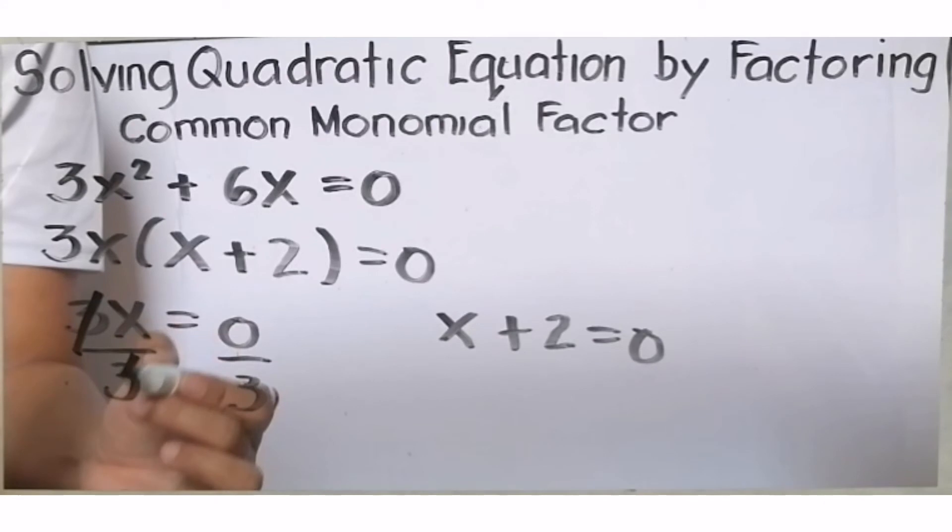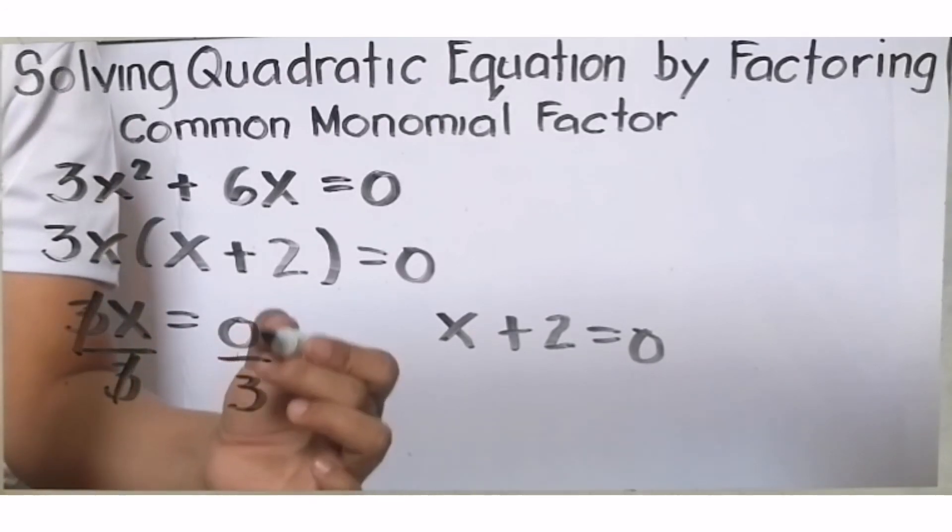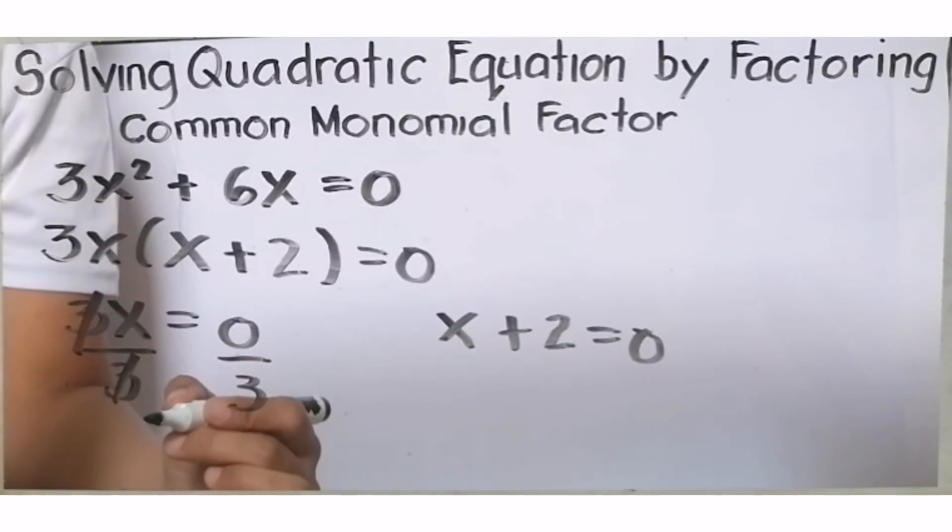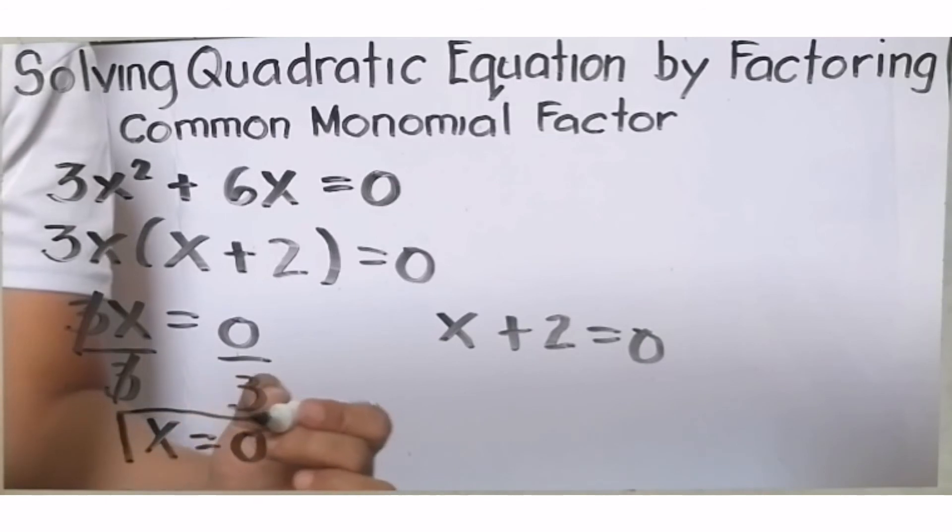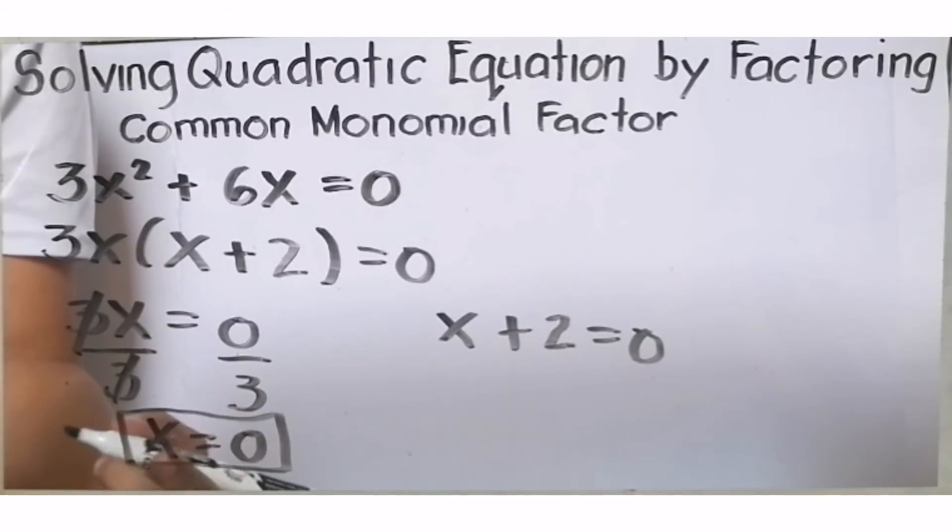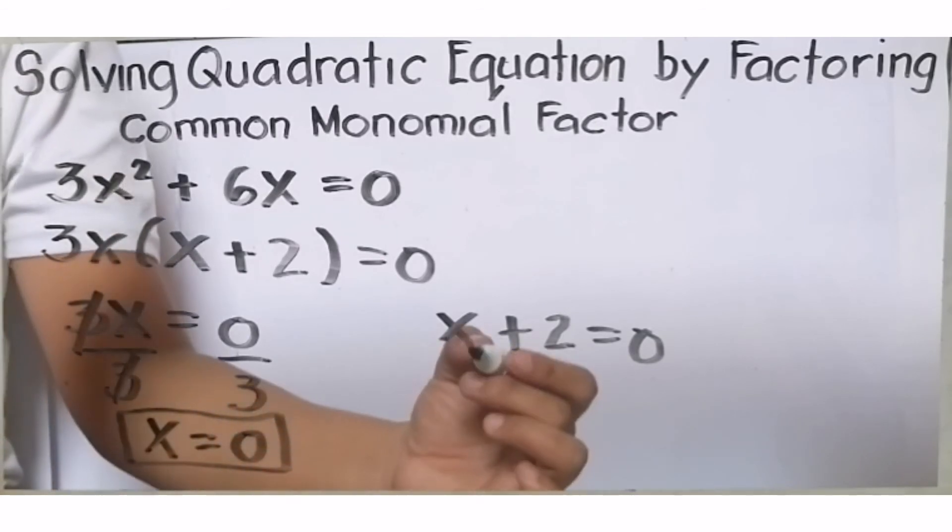3 divided by 3, that will be 1. And 0 divided by 3 is 0. Meron tayong x = 0. Ibig sabihin, one of the solutions or roots will be 0.